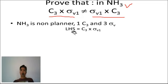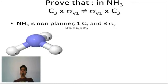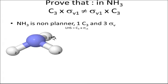NH3 is non-planar and it has 1 C3 and 3 sigma V. So left hand side C3 into sigma V1. Here these are the position of hydrogen. This is numbering 1, 2 and 3 is given.